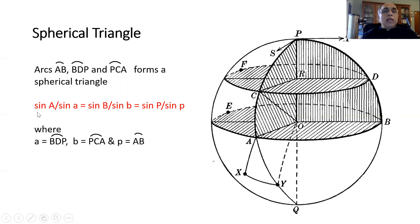Using that we have the formula: sine of the angle A by sine of this arc here would be same as sine of the angle here and sine of this arc AP, and sine P by sine of arc AP.